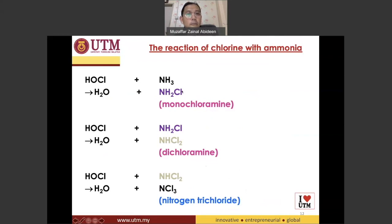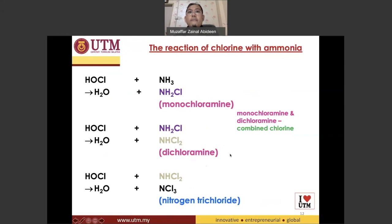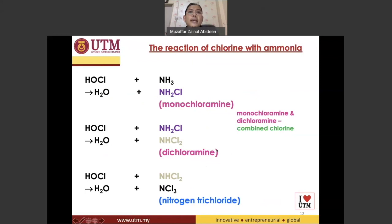Monochloramine and dichloramine can also disinfect water. We have hypochlorous acid and hypochlorite ion — those two are free chlorine and can disinfect water. Monochloramine and dichloramine also can disinfect water, but nitrogen trichloride will not be able to disinfect water. Monochloramine and dichloramine are called combined chlorine. To rank the best disinfectants: first is hypochlorous acid (HOCl), second is hypochlorite ion (OCl⁻), followed by monochloramine and dichloramine. Combined chlorine is not as good as free chlorine.